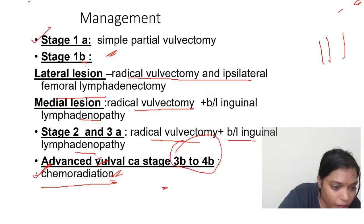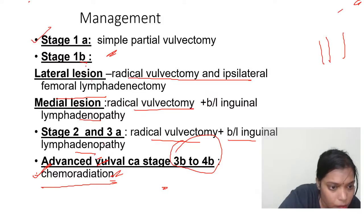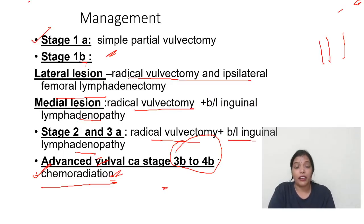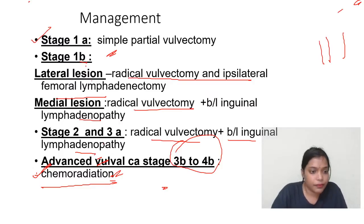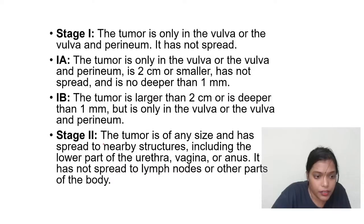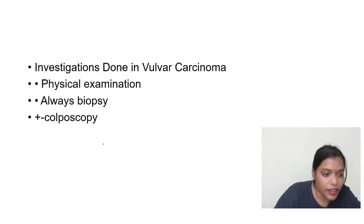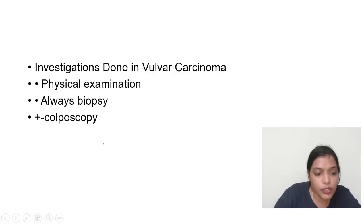Most common symptom of endometriosis is dysmenorrhea — not menorrhagia. The most consistent symptom is secondary dysmenorrhea. Management of endometriosis is GnRH analogs. That finishes today's session where I discussed all the remaining questions from the recall.